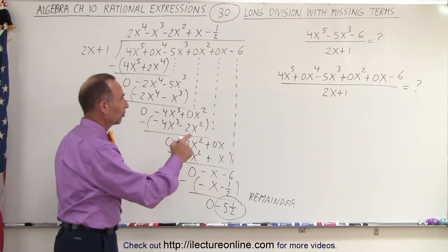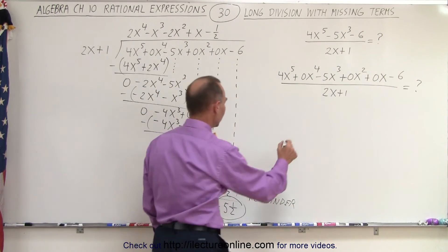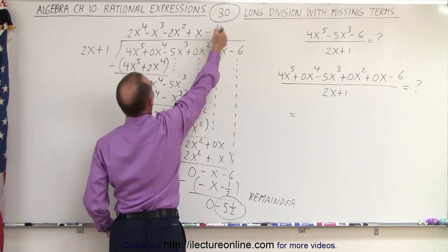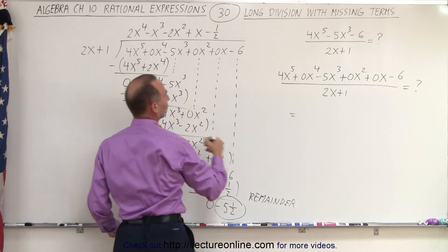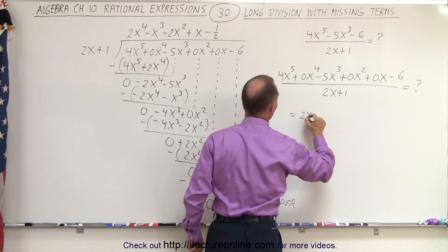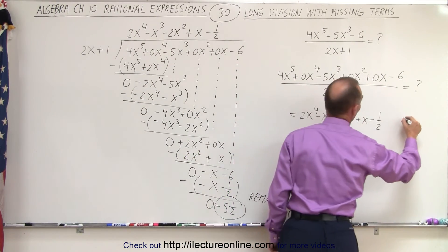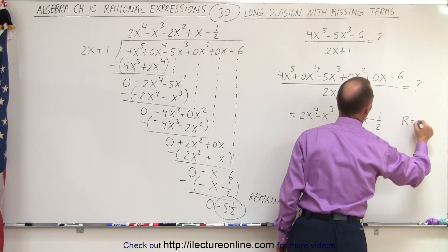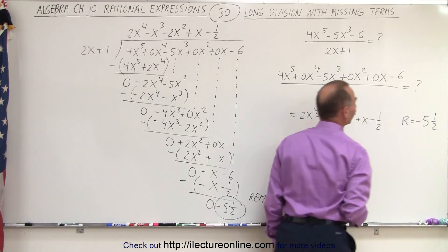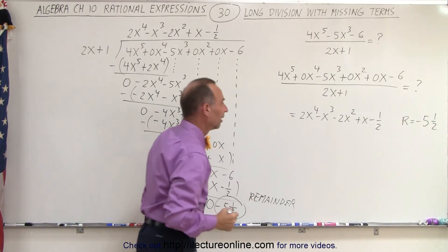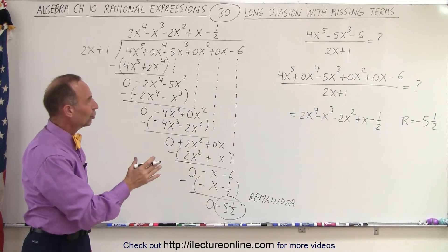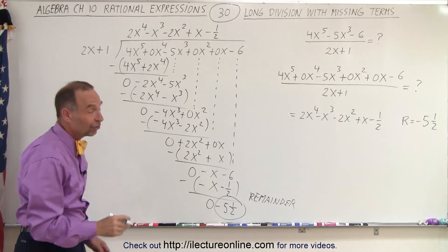So we can say that the result of that is equal to — taking this as our answer — 2x to the 4th, with remainder equal to minus 5 and a half. And that is the solution using long-hand division.